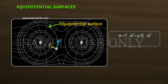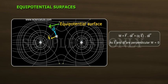W is equal to F bar dot DL bar is equal to Q E bar dot DL bar. As E bar and DL bar are perpendicular, W is equal to zero.